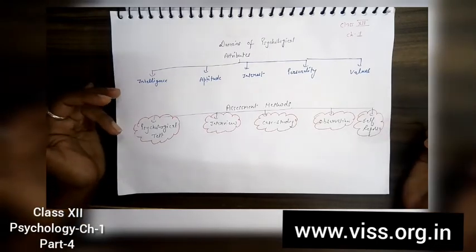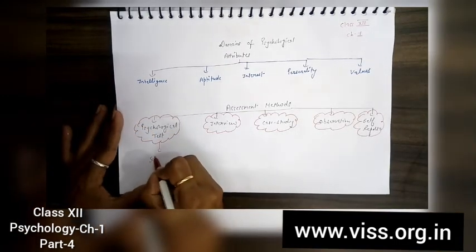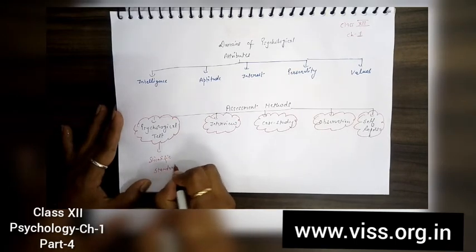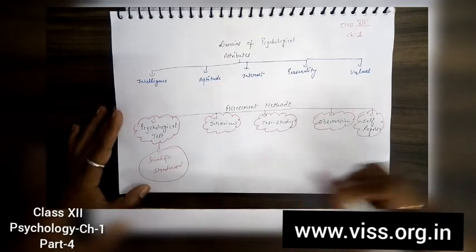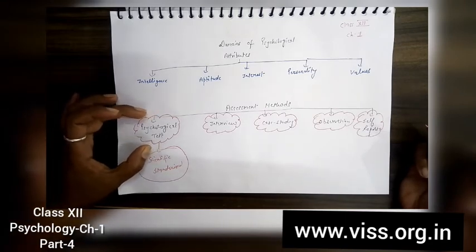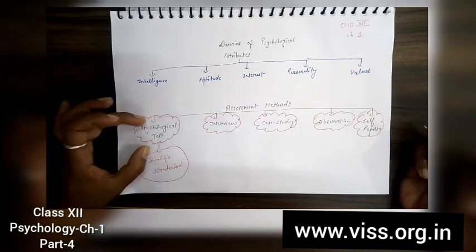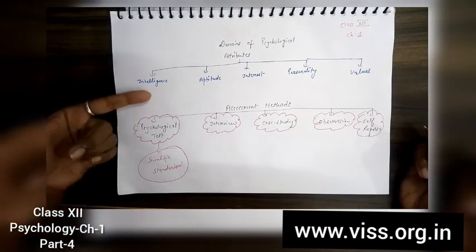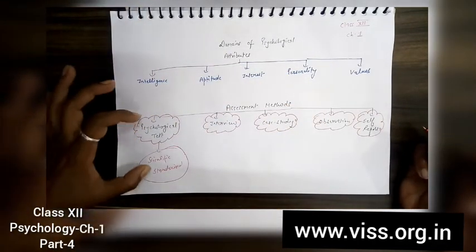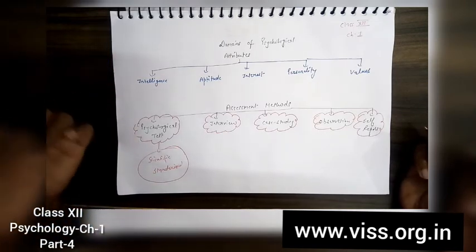The next topic is about assessment methods. First is your psychological test. What is a test? These are scientific standardized methods. You have learned in class 11 that these are standardized, meaning they are made after doing a lot of research. A lot of work is done to make these psychological tests, and these tests help in understanding - it could be intelligence, it could be aptitude, it could be interest, it could be personality of a person. So these tests come in variety and you can go and check intelligence of any person with the help of these tests.